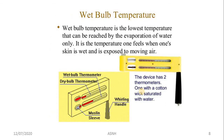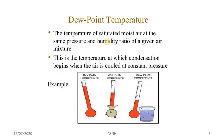Wet bulb temperature is the lowest temperature that can be reached by evaporation of water only. It is the temperature one feels when one's skin is wet and exposed to moving air. A sling psychrometer has two thermometers: the dry bulb thermometer's bulb is not covered, while the wet bulb thermometer's bulb is covered by a wet cloth.